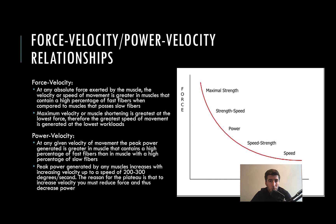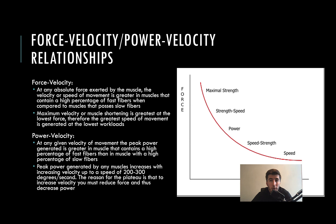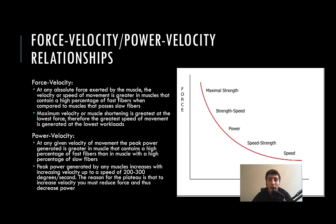When muscles exert force through concentric or eccentric actions, there's a net velocity because there's a speed at which displacement occurs. The force-velocity relationship states that at any absolute force exerted by the muscle, the velocity of movement is greater in muscles containing higher percentages of fast muscle fibers — that makes sense because V max is higher. Additionally, the maximum velocity of shortening is greatest at the lowest force; therefore, the greatest speed of movement is generated at the lowest workloads. Think about how fast you can throw a baseball versus a bowling ball.